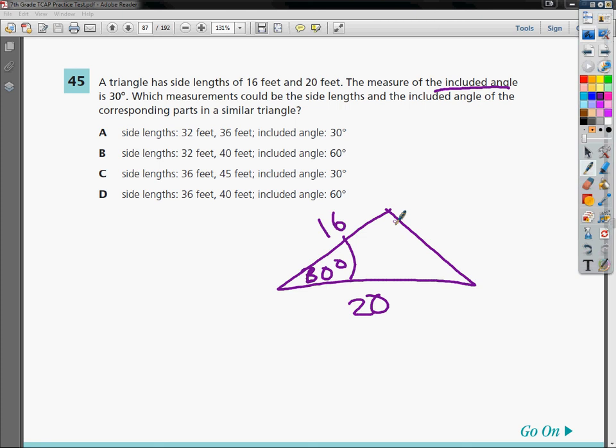Now, similar triangles have two things that make them similar. Number one, corresponding angles have to be congruent, or they have to be the same thing. So if the included angle is not the same, then it's not the right answer.